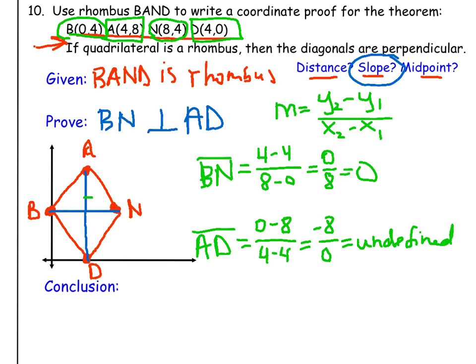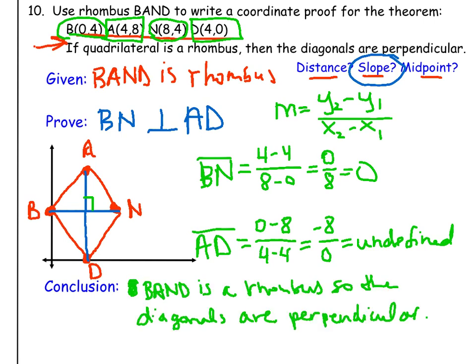So what we've just shown is that these two segments are in fact perpendicular, and so the conclusion is BAND is a rhombus...